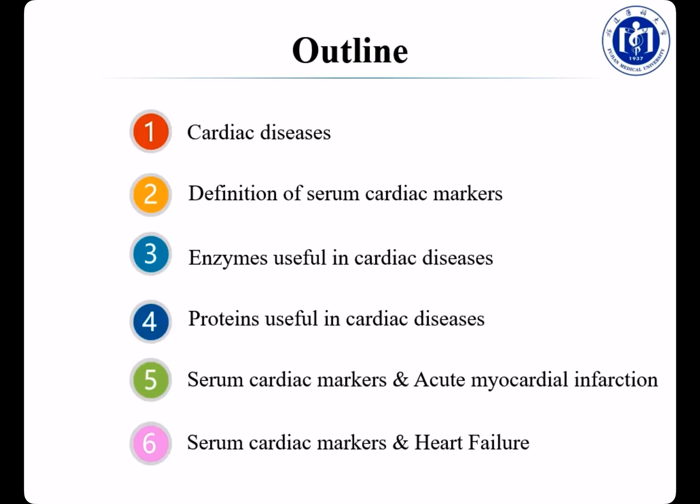This slide shows the general outline for this class. First, I will give a brief introduction of cardiac diseases, then show you the definition of serial cardiac markers. Then we will cover enzymes and proteins useful in cardiac diseases. In the end, we will take acute myocardial infarction and heart failure as two typical examples to clarify the differences between these markers and how to use them to diagnose AMI and heart failure.